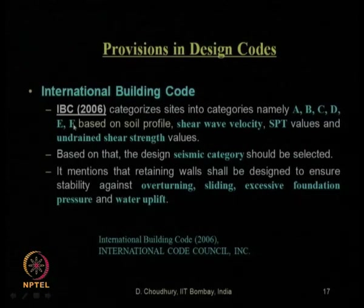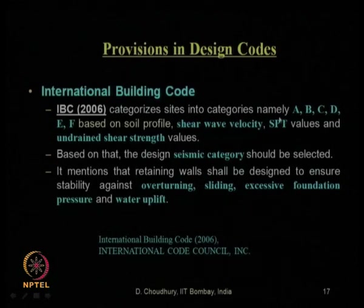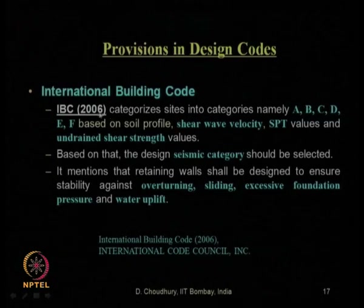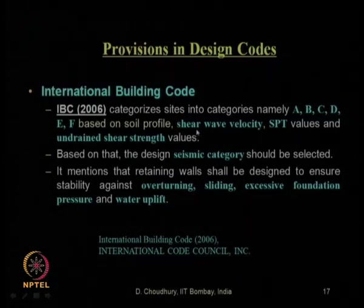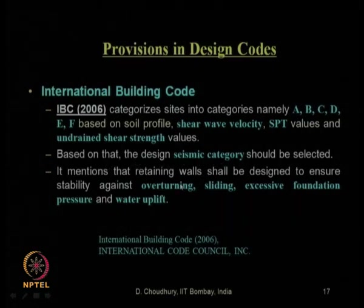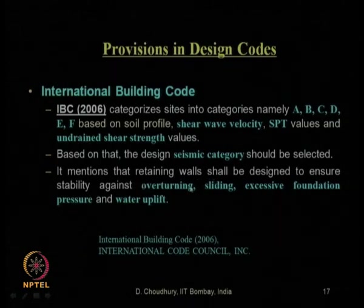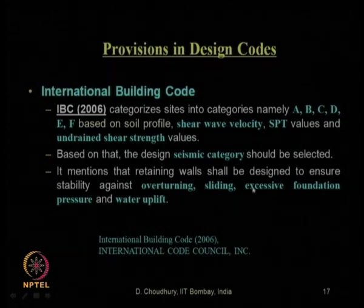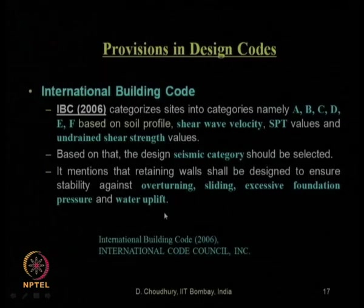The International Building Code IBC 2006 classifies soil or site into six major categories based on shear wave velocity, SPT value, and undrained shear strength. Based on the seismic category, it requires the retaining wall to be designed for stability with respect to overturning, sliding, excessive foundation pressure, and water uplift. With that, we had completed our previous lecture.